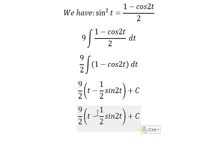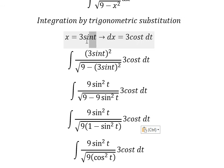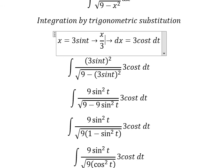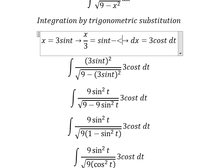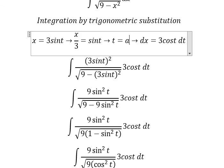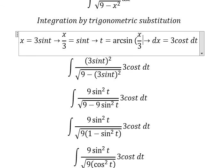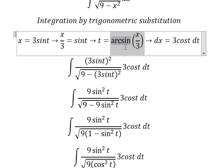For t, we divide both sides by 3, so we have t equal to arcsin of x over 3. So we put this one to replace t.